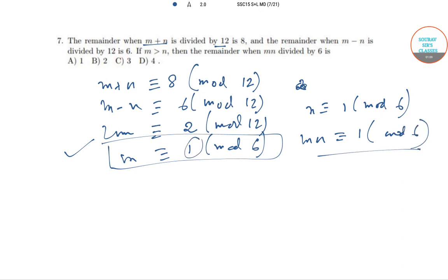So simply, m×n will be 1×1 (mod 6), which equals 1 (mod 6). When these two numbers are multiplied together, the remainder when divided by 6 is 1. The answer is option A.